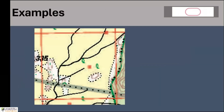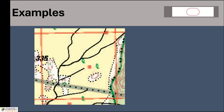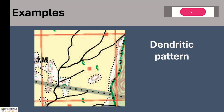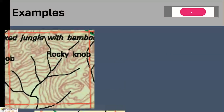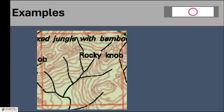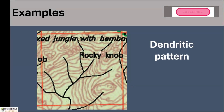Let's take another example. We have a grid square and there is a drainage pattern within it. It looks like a tree with a lot of branches, so the pattern is dendritic pattern. Moving to the next, we have a similar shape — there is also a dendritic pattern.